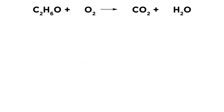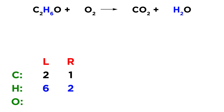Let's look at the next one — a combustion reaction. We have C2H6O plus O2 yields CO2 plus H2O. Let's make our table. We have carbon, hydrogen, and oxygen. For carbon, we have two atoms on the left and one on the right. For hydrogen, we have six on the left and two on the right. For oxygen, we have three on the left — one from C2H6O and two from O2 — and three on the right — two from CO2 and one from H2O.